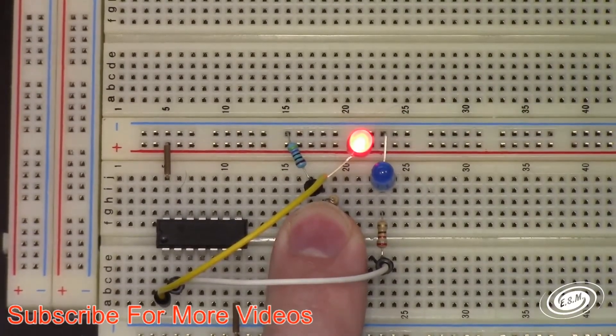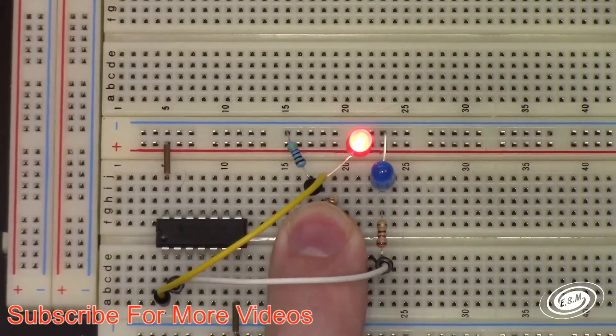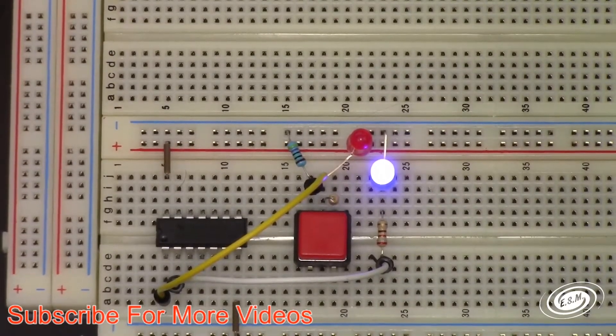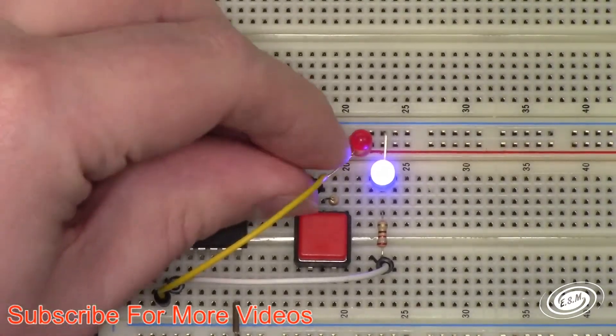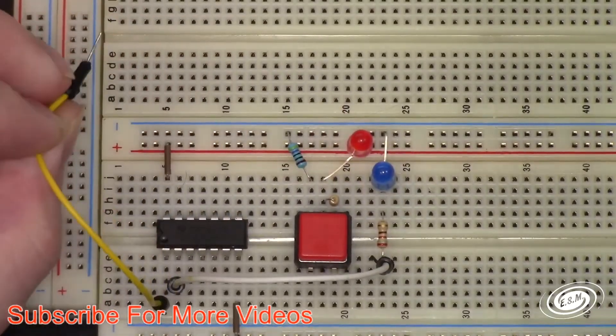And if I push the button to light this light, the light goes off. The signal has been inverted. So just to show you, if I unhook this input...